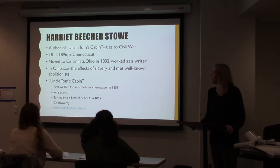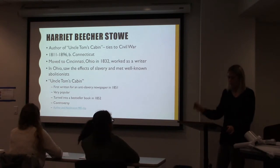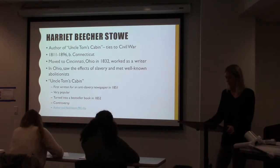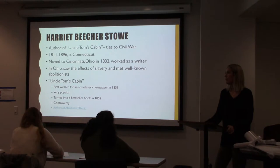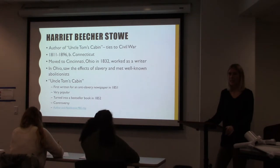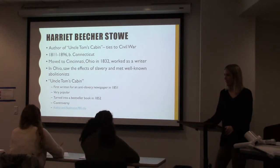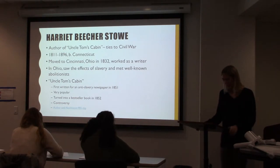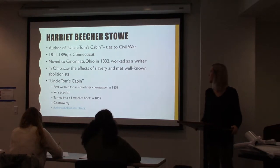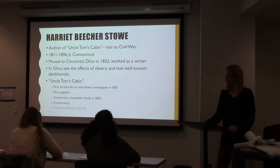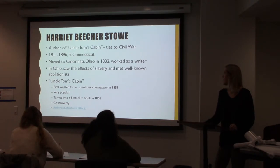Harriet Beecher Stowe was born in 1811 in Connecticut. She was one of seven kids. Her father, Lyman Beecher, was a minister who had strong beliefs about the importance of education — he believed everyone should have an education, including women. So sons and daughters alike, he educated his kids, which was kind of a rarity for 19th century women. He was also really popular for his anti-slavery sermons and activities, which influenced Beecher's life growing up. When she was about 21 they moved to Ohio, where she helped support her family by working as a writer, writing for several publications and becoming pretty well-known.